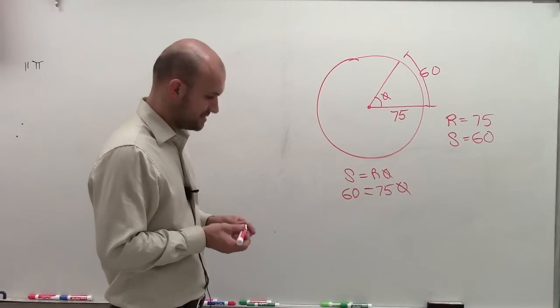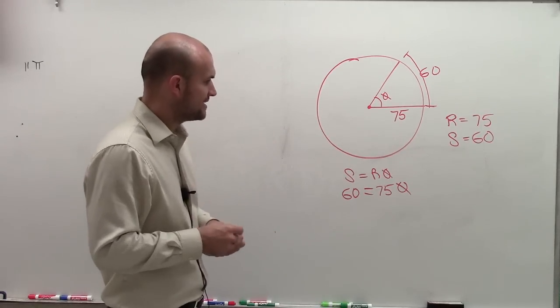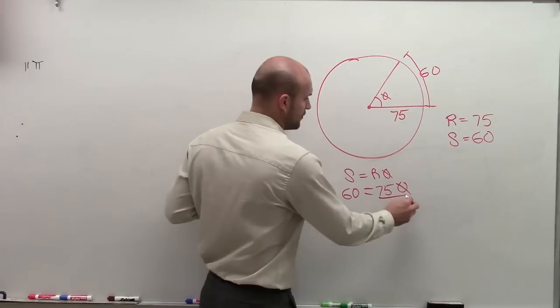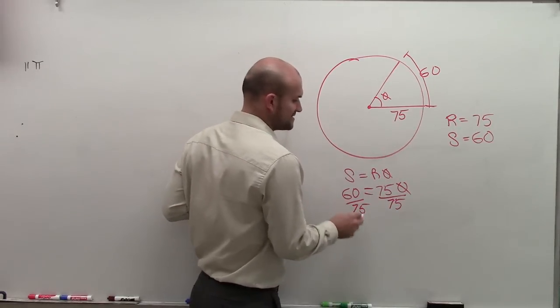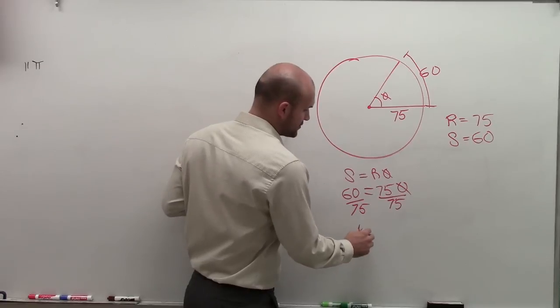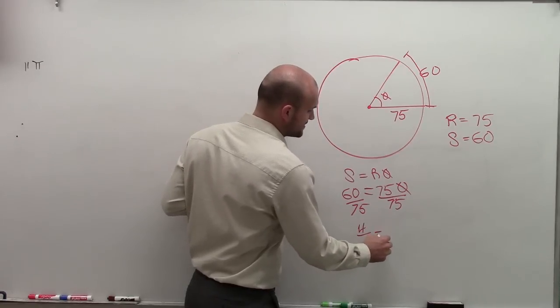So when looking at this, to find the measure of theta, what I need to do is simply solve for theta. So I'm going to divide by 75 on both sides. And therefore, I have 60 divided by 75, which is going to reduce down to 4/5 equals theta.